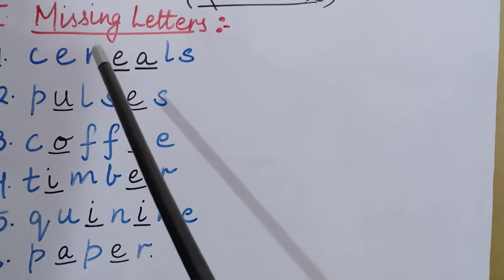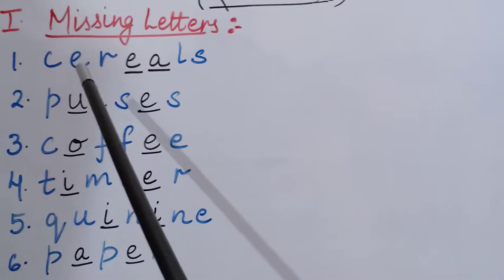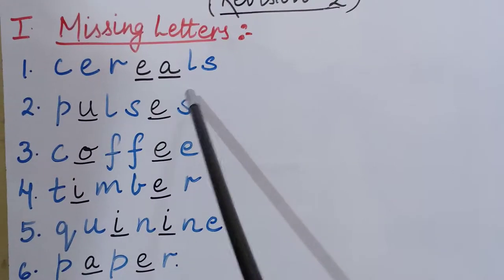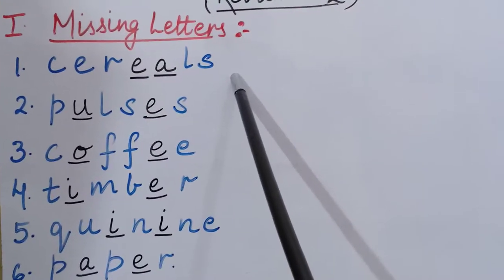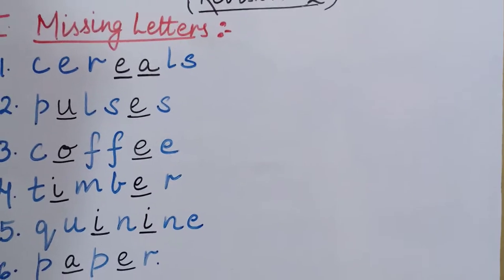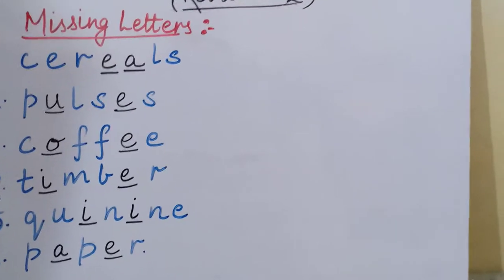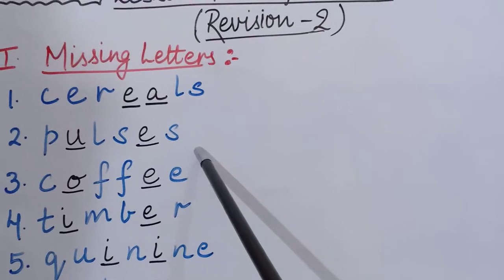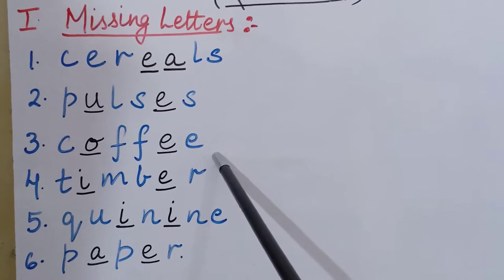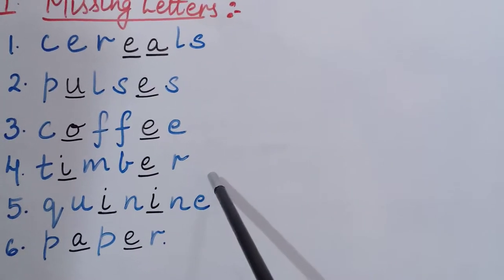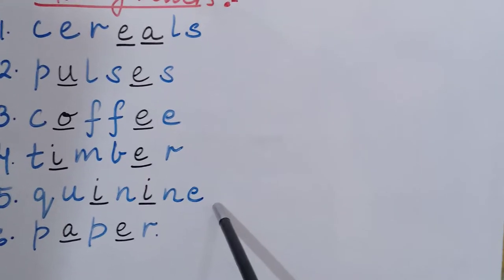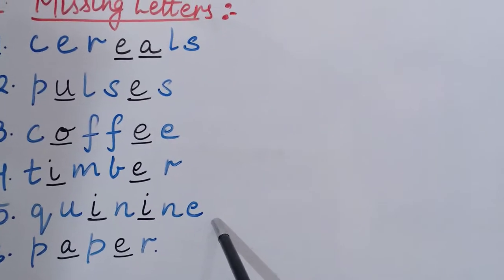The first part is missing letters. The first word is cereals — C-E-R-E-A-L-S, cereals. Cereals are like wheat, gram, millets. All these are cereals. Next is pulses — P-U-L-S-E-S, pulses are dal. Then coffee — C-O-F-F-E-E, coffee. Fourth one is timber — T-I-M-B-E-R, timber. Fifth one is quinine — Q-U-I-N-I-N-E, quinine.